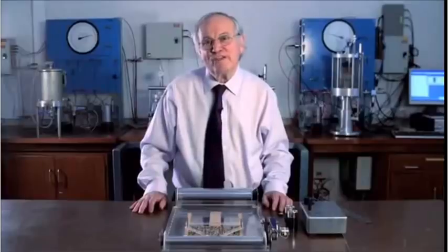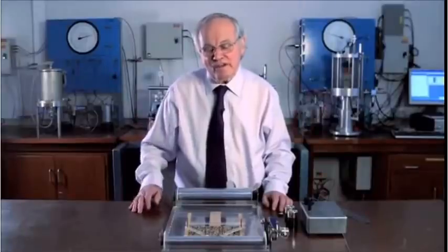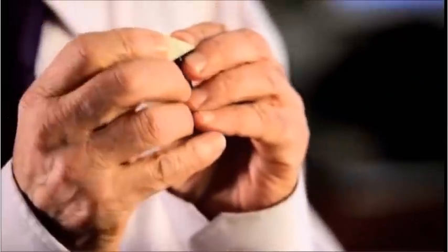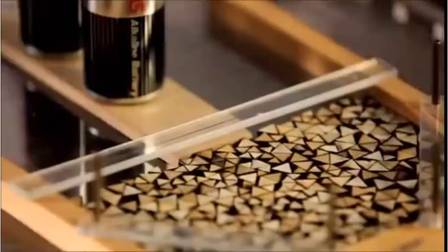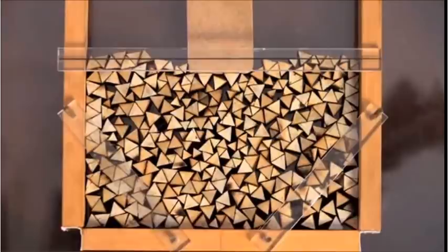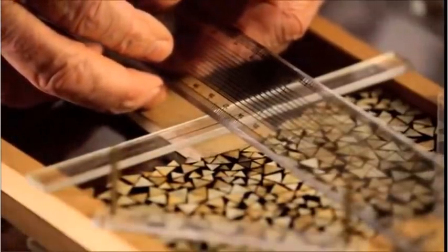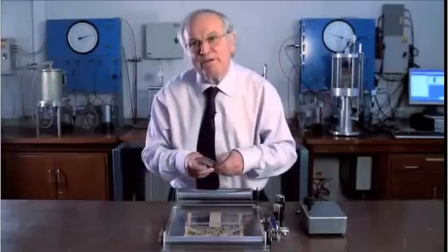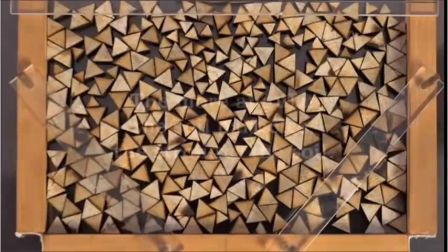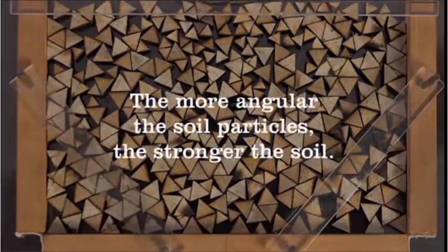You won't be surprised to learn that the shape of the particles is very important in determining the strength of the soil. We've looked at the effect of grading on circular particles. Here, we have replaced them by angular particles — and for simplicity, we've chosen triangular shaped particles. We load it with the two batteries and measure the penetration. We see that the penetration is 12 millimeters, which is a lot less than for the circular particles. So the lesson from this demonstration is: the more angular the soil particles, the stronger the soil.